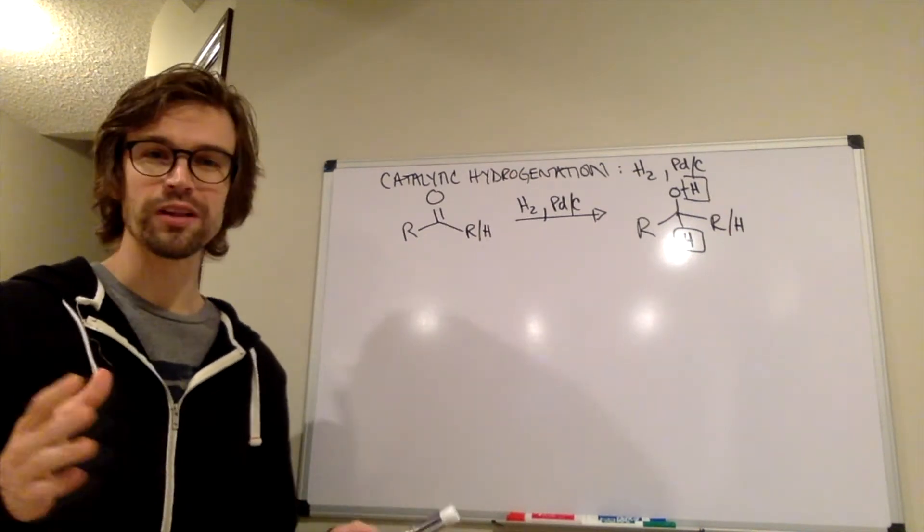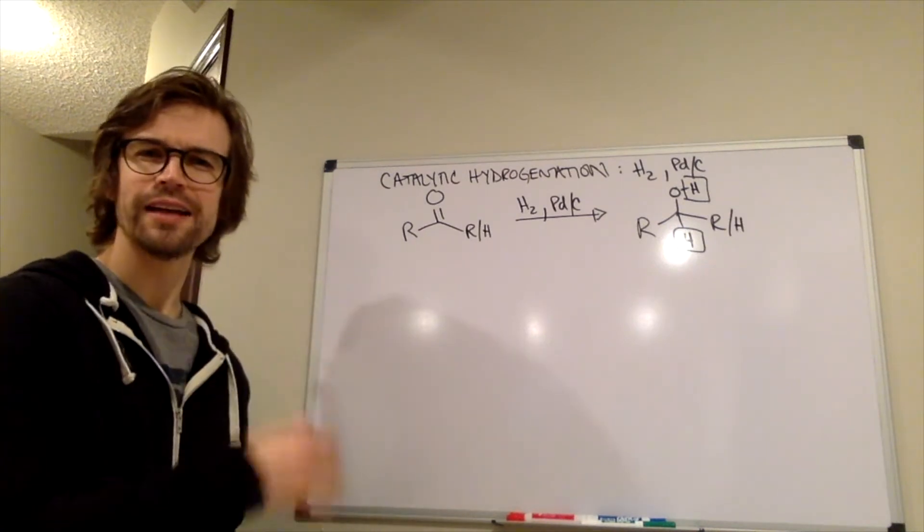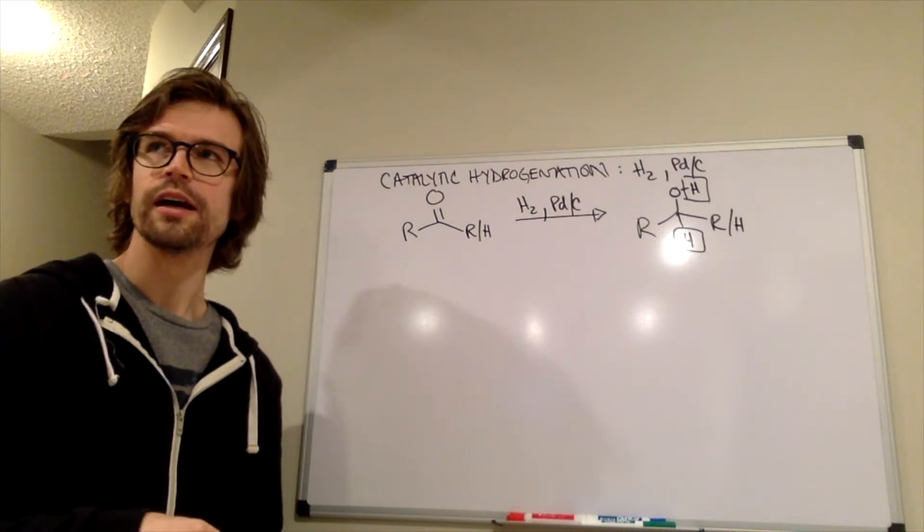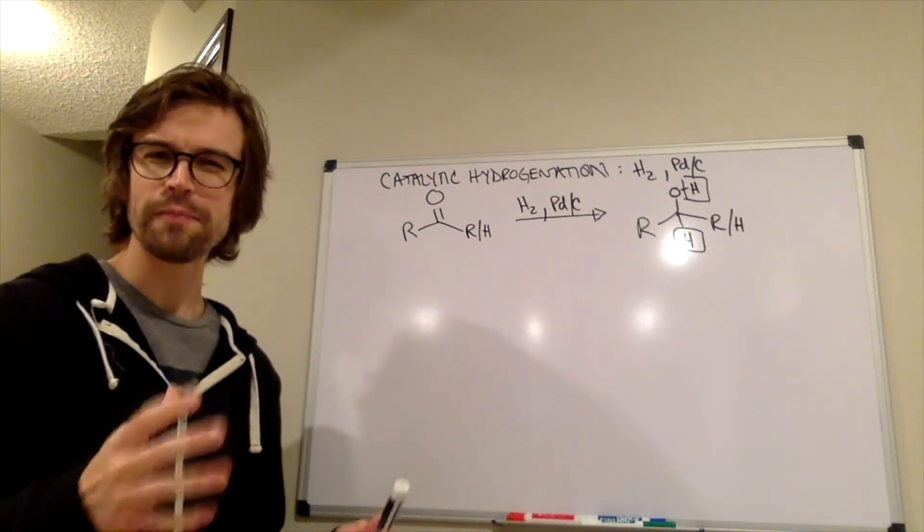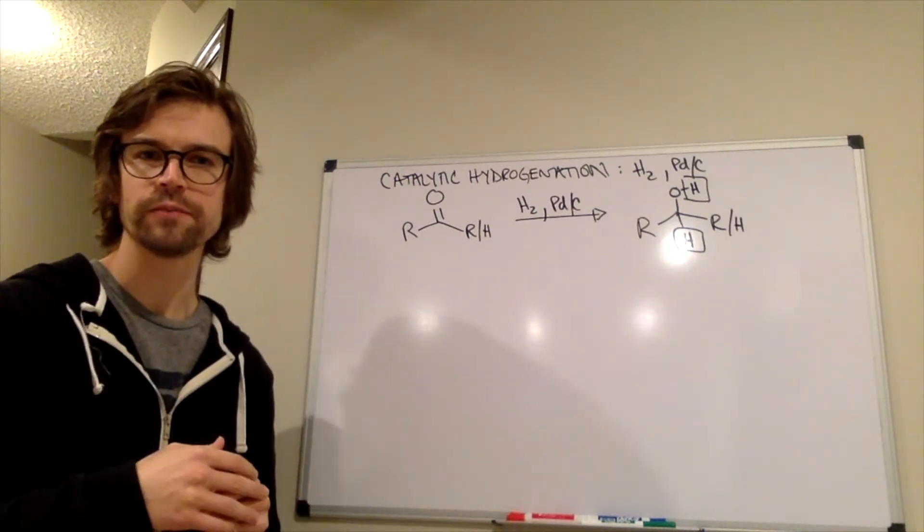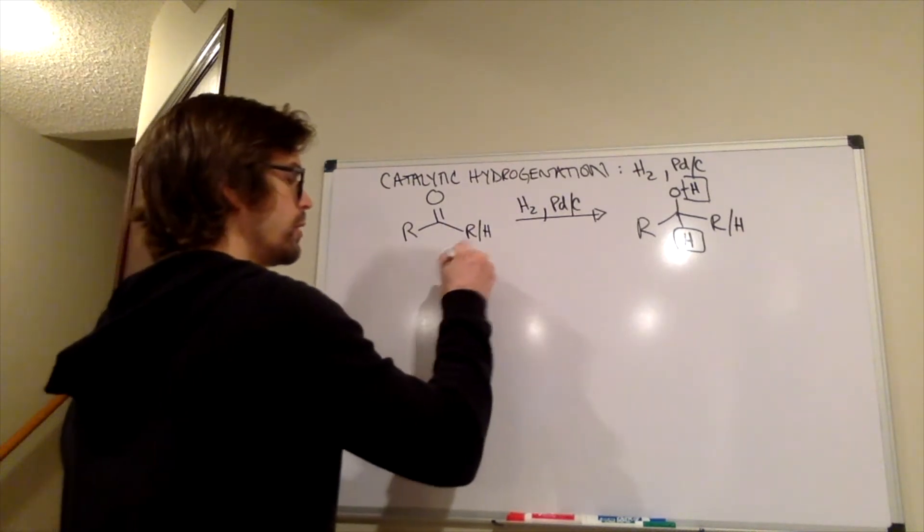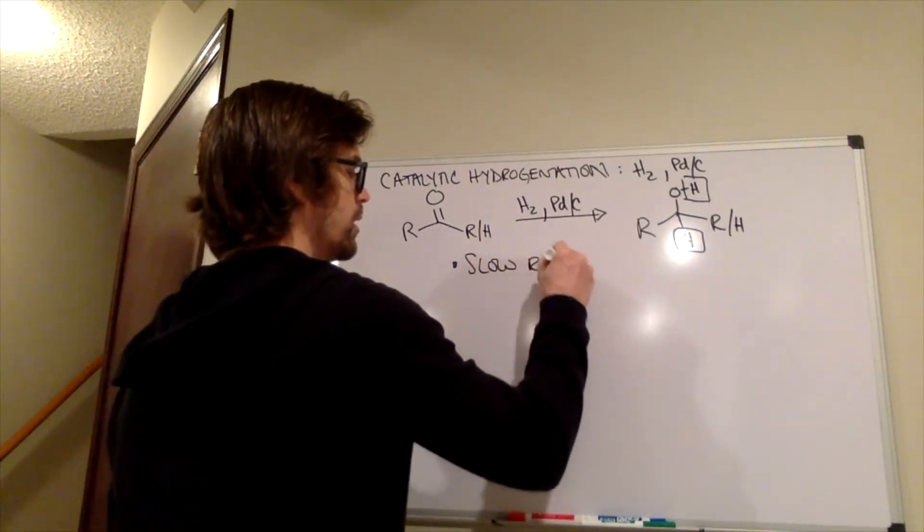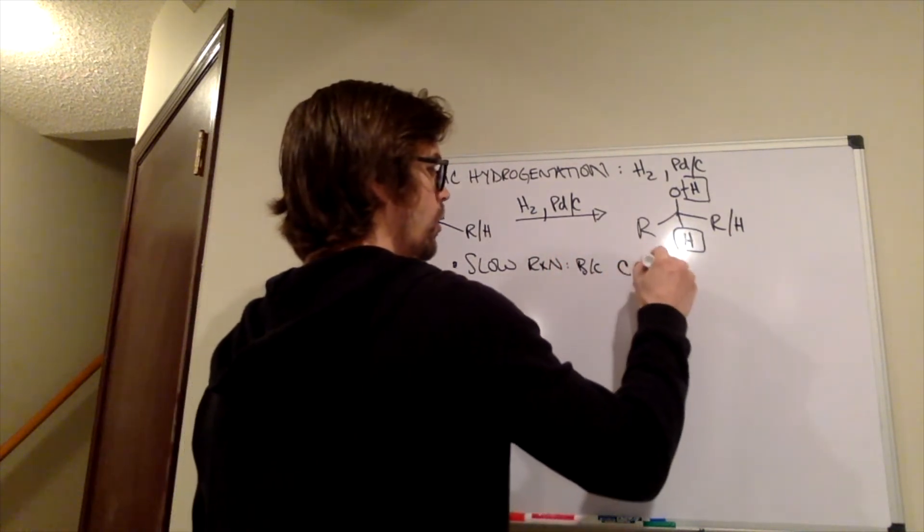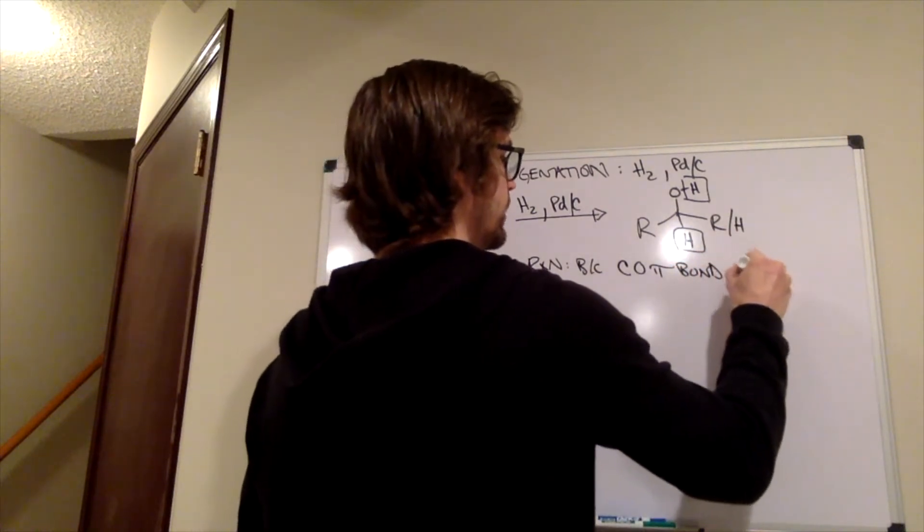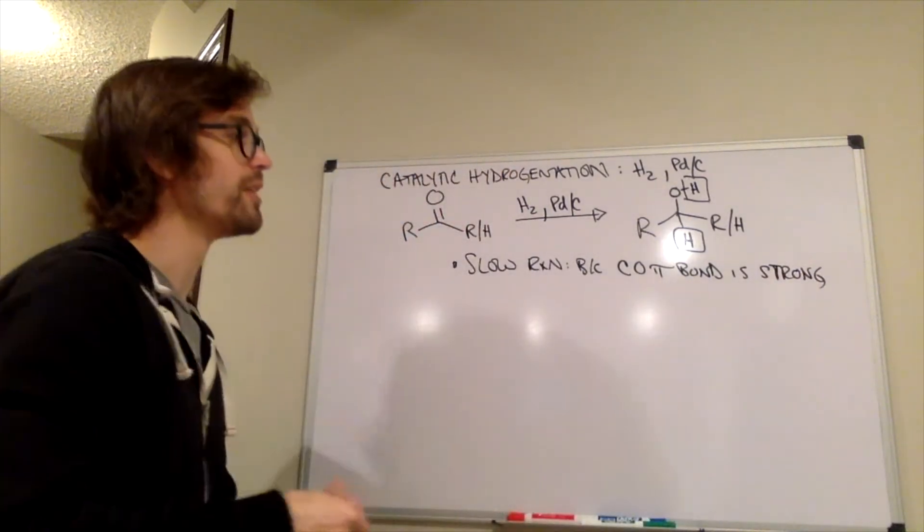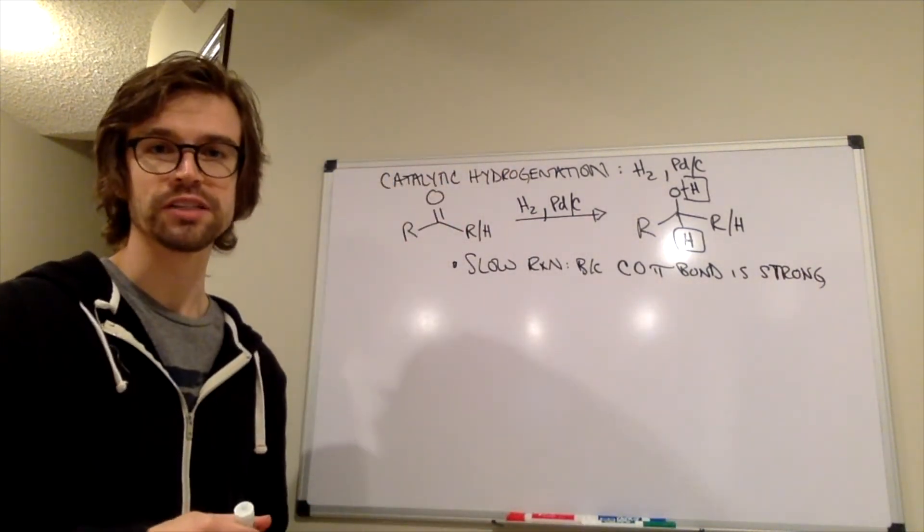One thing that we learned way back in Chapter 12 is, is this a fast reaction or is it a slow reaction? And what we learned is that it's a slow reaction. Can you think back to why that was? Why is this a slower reaction than reducing an alkene or an alkyne? So this is a slow reaction because the CO pi bond is strong. So the CO pi bond doesn't want to get reduced with this catalytic hydrogenation method.